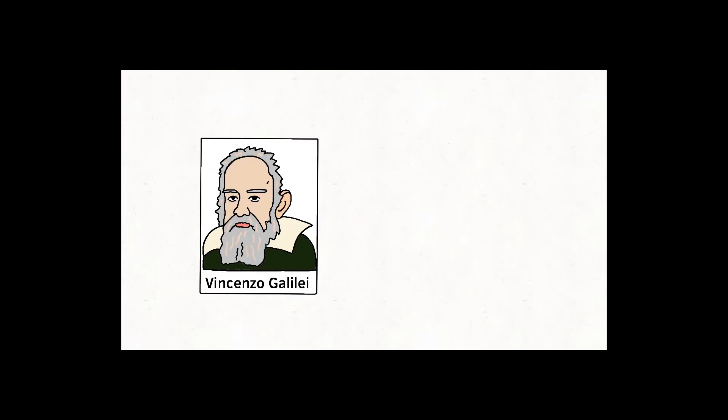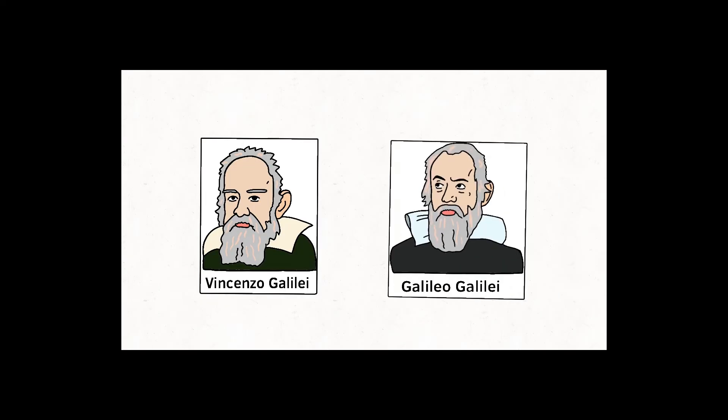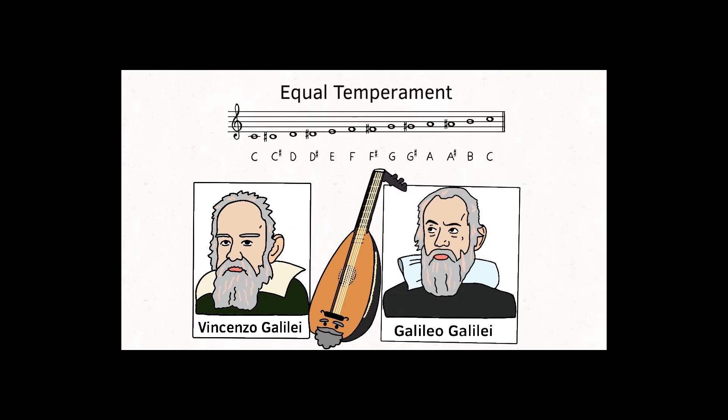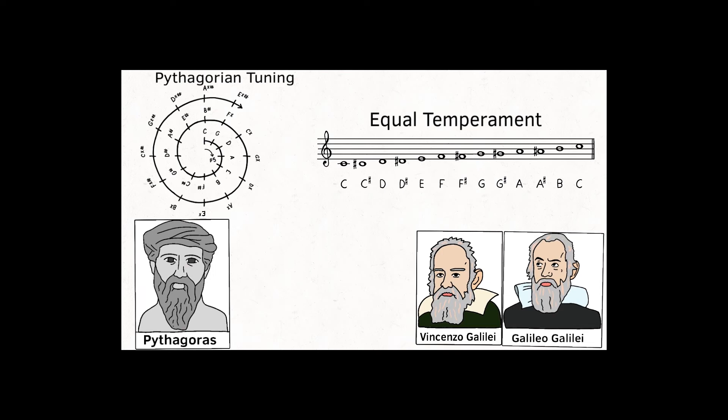Musician, composer, and music theorist Vincenzo Galilei and his son Galileo Galilei were tuning my great-grandpappy, the lute, and developed the physics to standardize the harmonic series to create equal temperament, no longer using Pythagorean tuning.